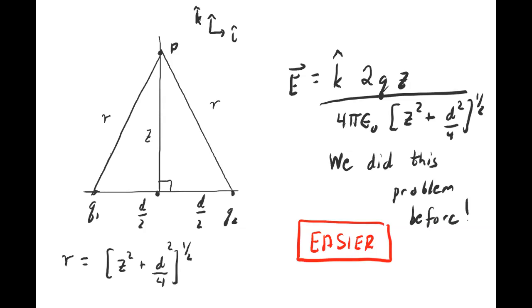Go back and look at our derivation where we actually calculated the electric field directly — we had to worry about vectors, directions, and orientations. You don't have to do all that. The electrostatic potential formalism allows you to calculate the electric field without worrying about vectors until the very end. That's why it's useful.